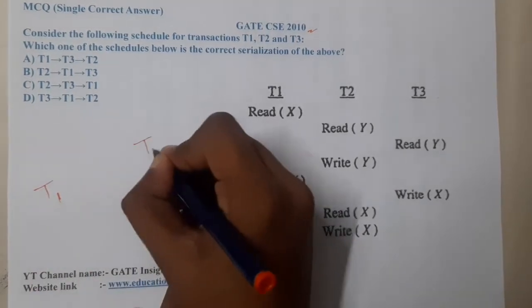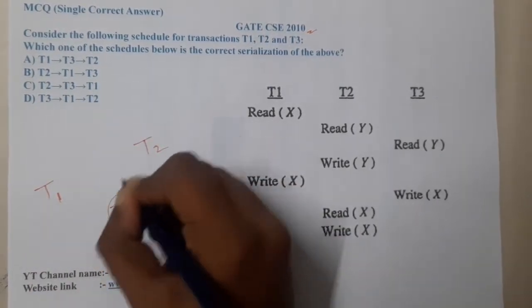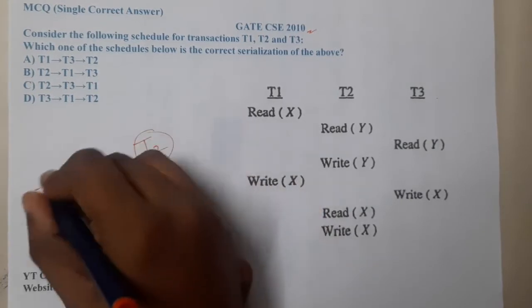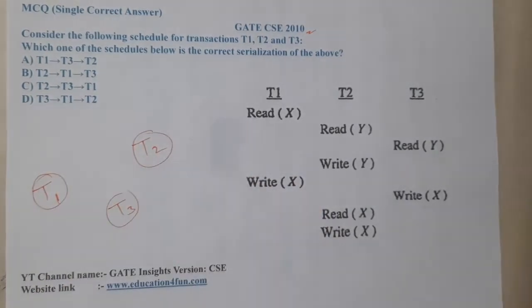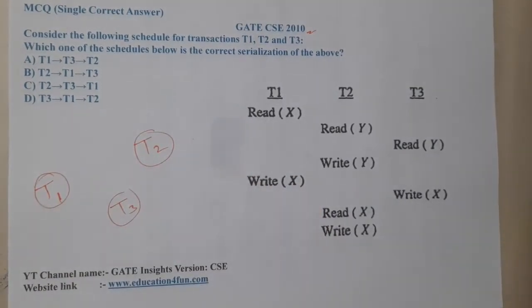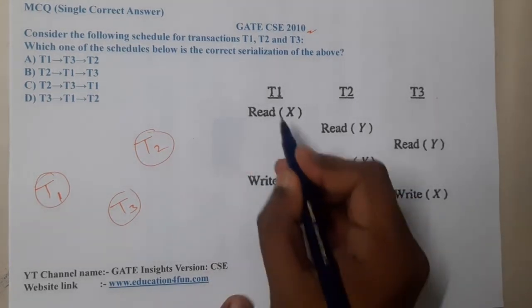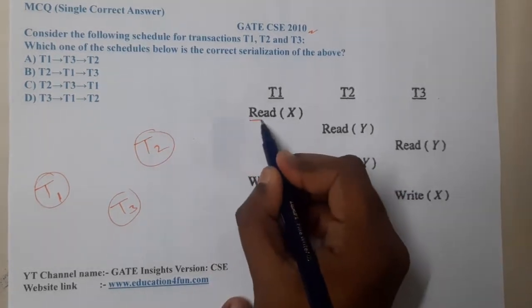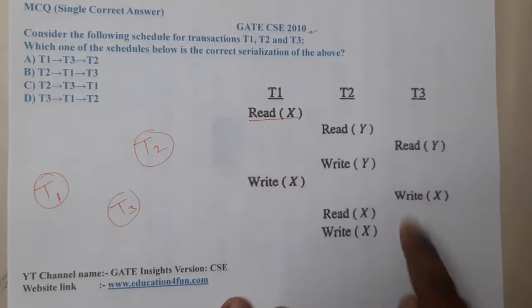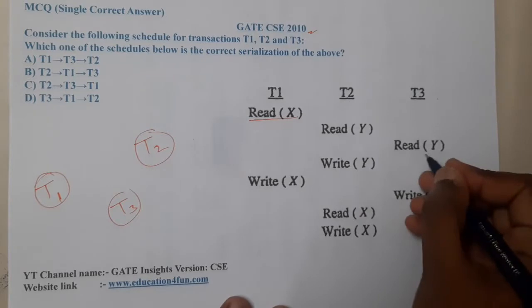Our only task is to draw the diagram of arrows and solve it. This is nothing but the precedence graph.